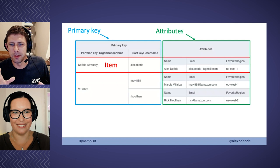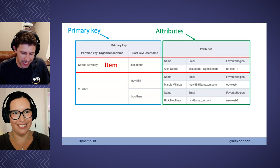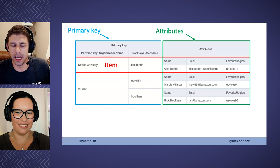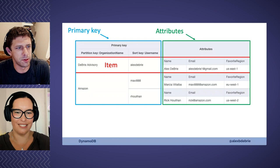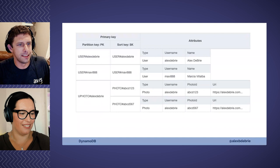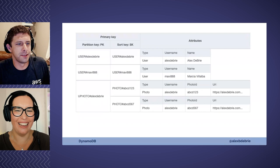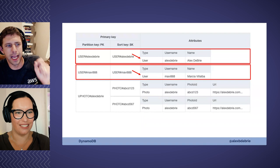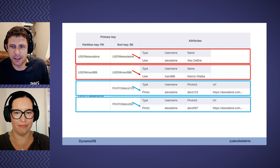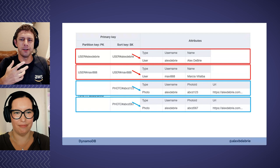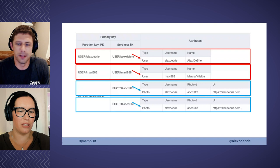I also want to talk about what we call single table design, because that really blows people's minds. This table has just users, but what we're building today is like an Instagram clone — we have users, photos, likes on photos, comments on photos, followers, things like that. Here is a table with single table design. It looks a little more confusing, but you can see I have two user items and a type attribute identifying each — and in addition to that, I have a couple of photo items with type photo. They're all in the same table. But if they're all in the same table, how do we use the primary key? Why would you put everything in one table?